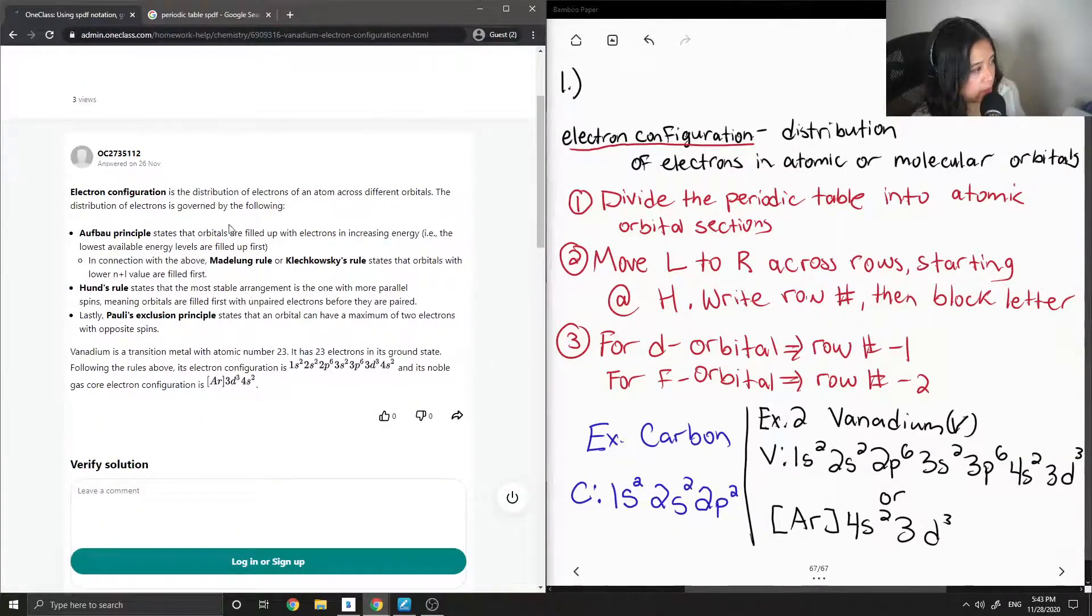So the junior tutor said, electron configuration is the distribution of electrons of an atom across different orbitals. The distribution of electrons is governed by the following. Aufbau principle states that orbitals are filled up with electrons in increasing energy. For example, the lowest available energy levels are filled up first. In connection with the above, the Madelung rule, or Kletchkoski's rule, states that orbitals with a lower n plus l value are filled first.